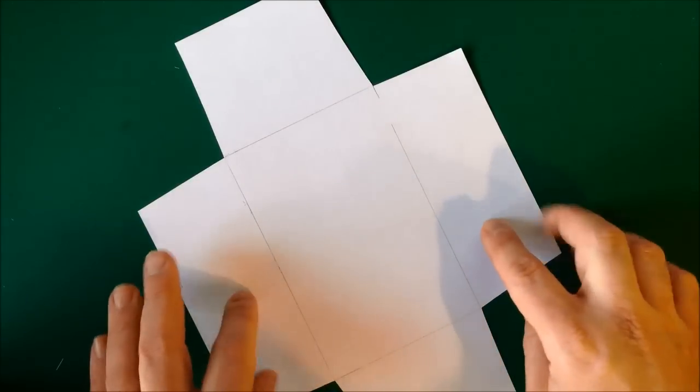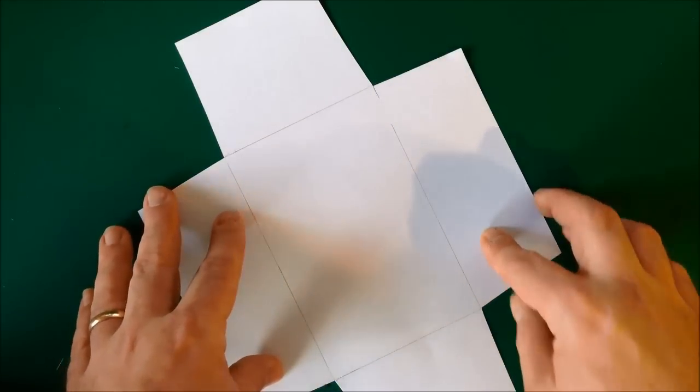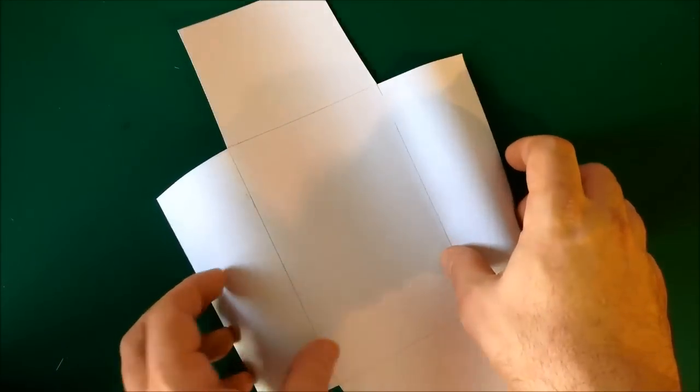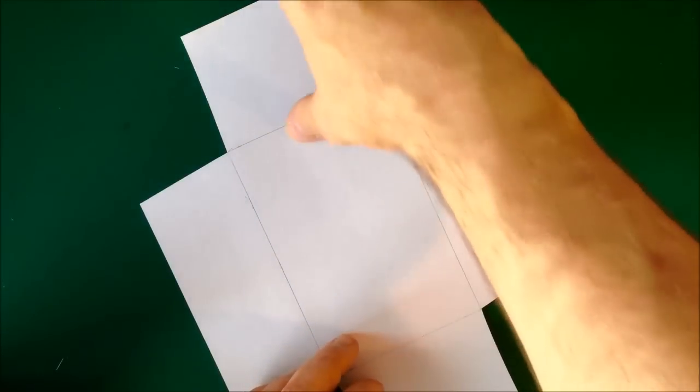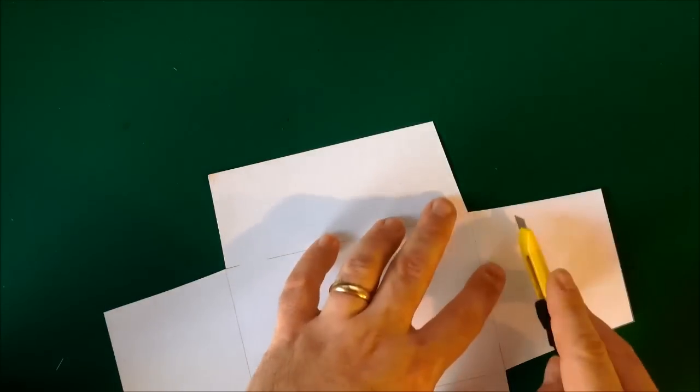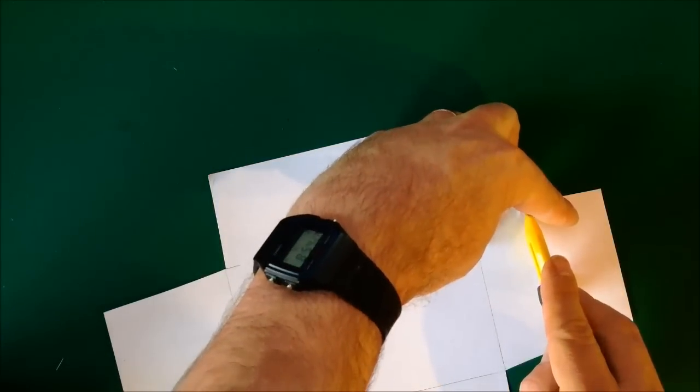Now these parts here are folded up to form the back of the envelope. This becomes the bottom flap and this becomes the top flap. So these two flaps we need to shorten a little.